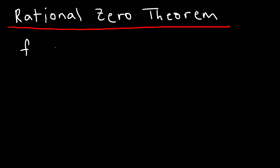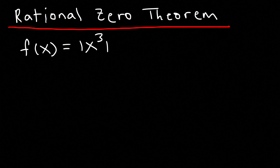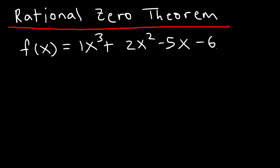Here's an example. Let's say that f(x) is equal to x³ + 2x² - 5x - 6, and let's list all of the possible rational zeros. We need to divide p by q, where p is associated with the constant term and q is associated with the leading coefficient.